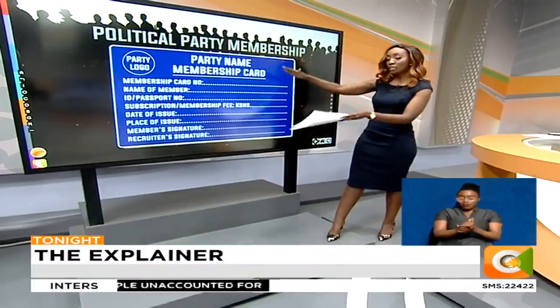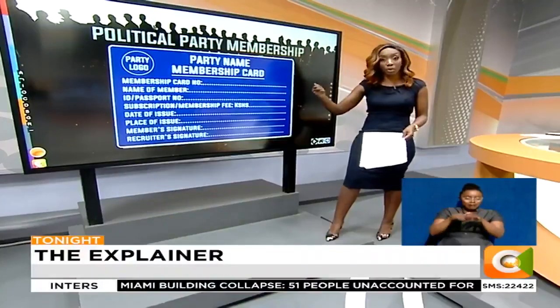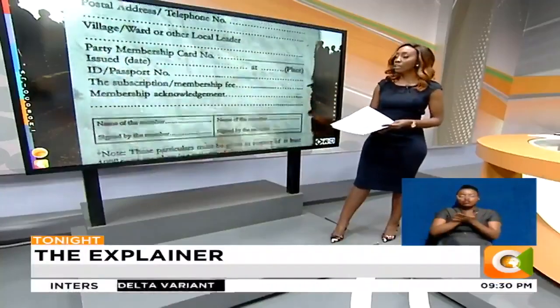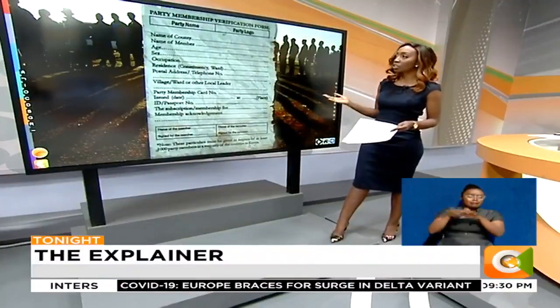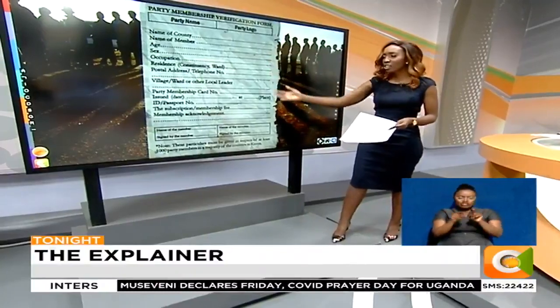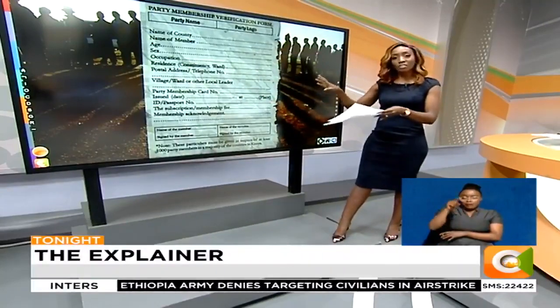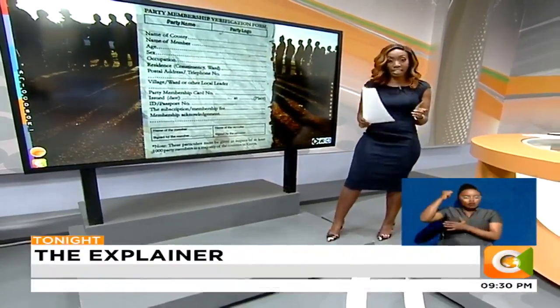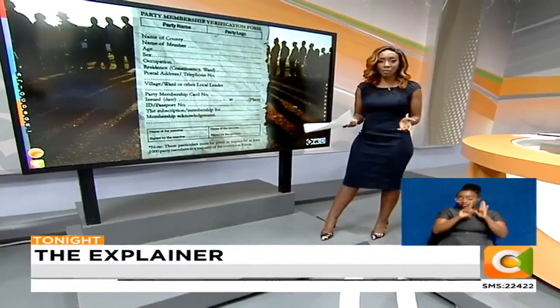There are actually two documents: you get the party membership card, and the party keeps a counterfoil for their own records. Those are then taken to the registrar of political parties. This is the party membership verification form, which is lodged with the office of the registrar — it includes the party name, party logo, name of county, the member's name, occupation, area of residence, and the party membership card number. All of these things need to happen for you to be said to be a bona fide member of a registered political party. Did you go through any of these processes before you found your name on that list? That is the big question tonight.